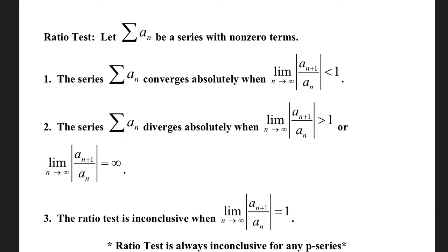Ratio test. Let the infinite series of a sub n be a series with non-zero terms. Number one, the series converges absolutely when the limit of a sub n plus one over a sub n is less than one.